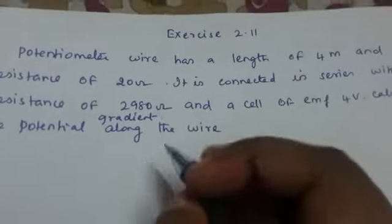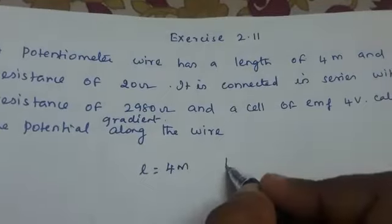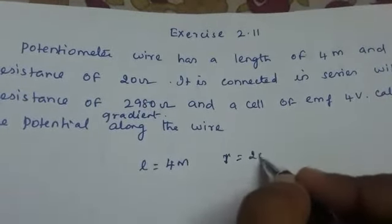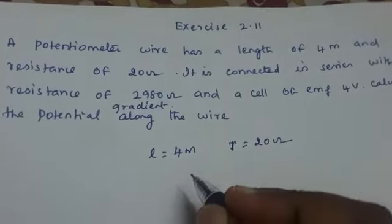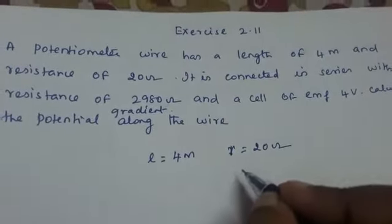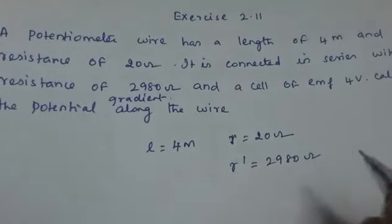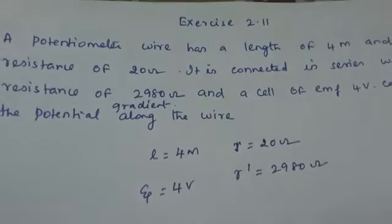What is given is the length of the potentiometer wire, that is 4 meter, and the resistance of the wire is 20 ohm. It is connected in series with another resistance, R dash, of 2980 ohm, and the EMF of the cell is given as 4 volt.